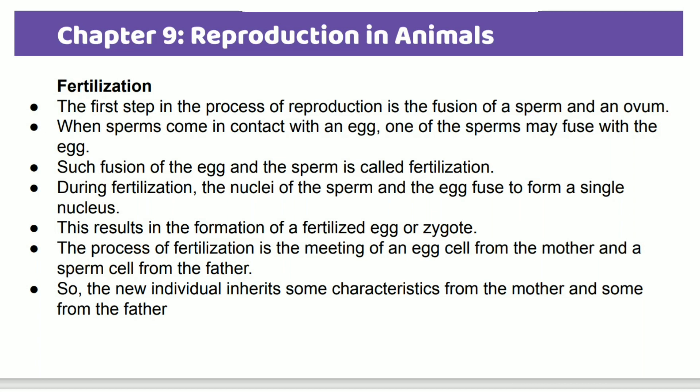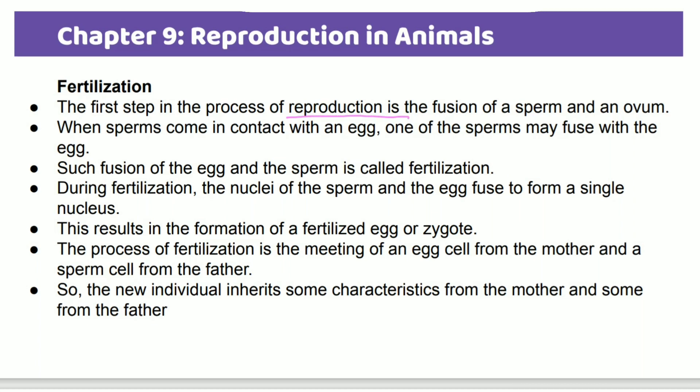What is fertilization? The first step of reproduction is fertilization — it is the fusion of sperm and ova. Each sperm comes in contact with an egg, and one of the sperm may fuse with the egg. Fertilization means the nuclei of the sperm and egg fuse to form a single nucleus, resulting in a single cell called a zygote.